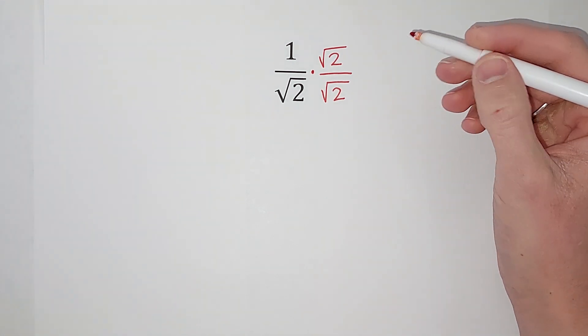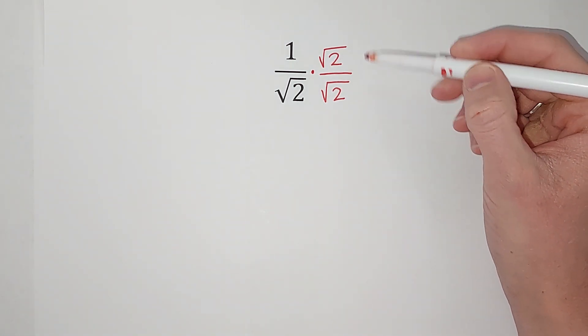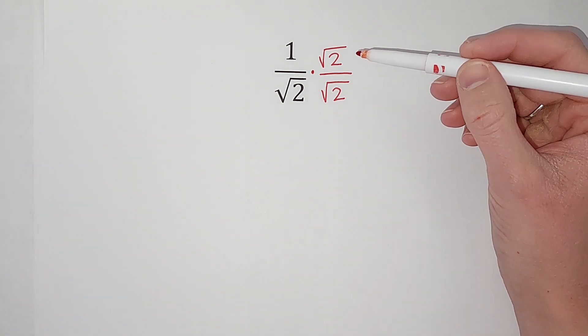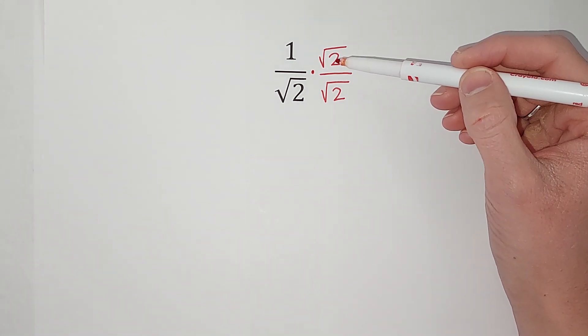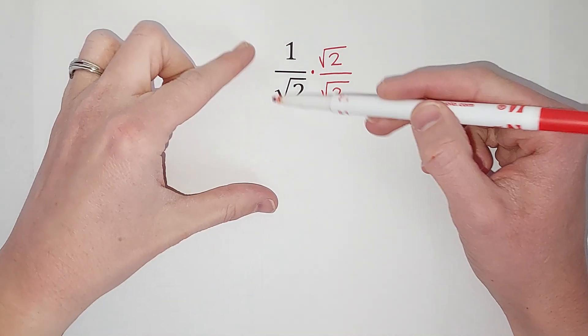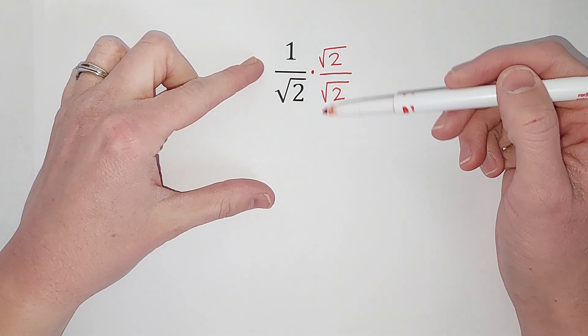So I'm really just multiplying by one; it's just a really weird-looking one. So anything multiplied by one is just itself, so I'm going to change what this fraction looks like but not its actual value.